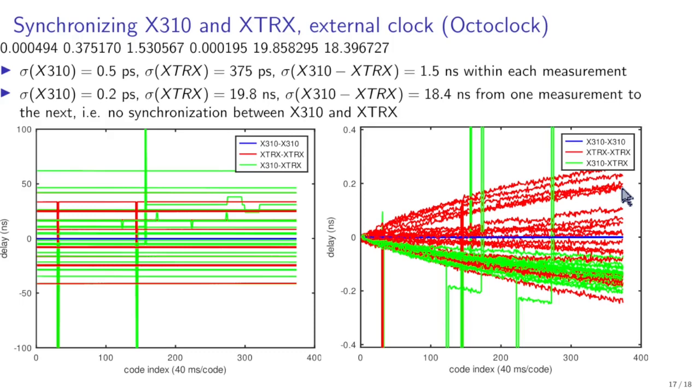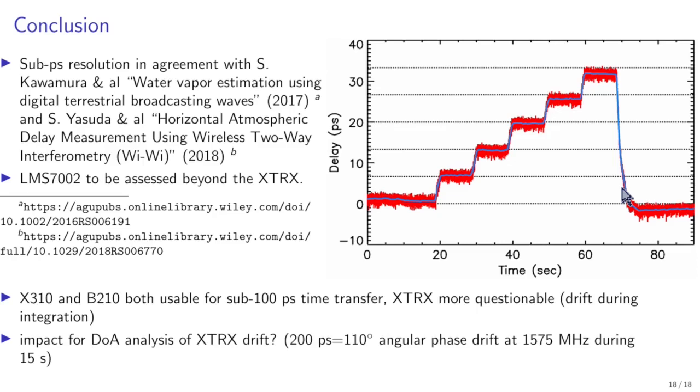Remember here the XTRX is sampling at 5 mega sample per second or 200 nanosecond period. So this concludes the presentation about sub sampling period measurement resolution. We see that both X310 and B210 are usable for sub 100 picosecond time transfer. The XTRX is more questionable. If we consider 200 picosecond at 1.57 gigahertz which is the GPS L1 frequency you see that we have somewhat 110 angular degree phase rotation which starts preventing our ability to accumulate energy in a correlation or in a radar analysis.